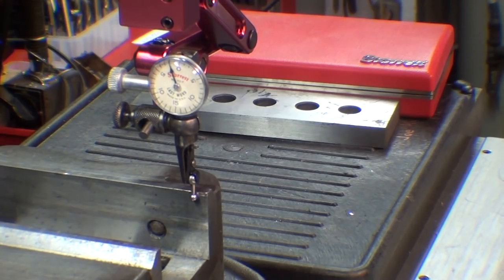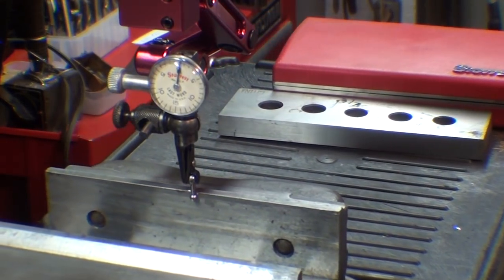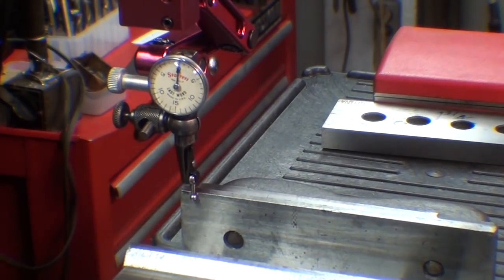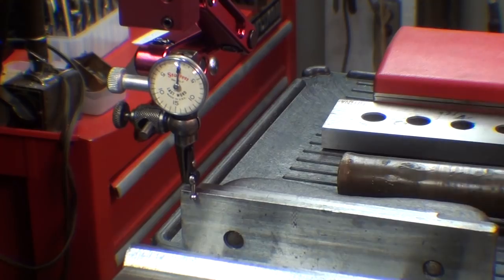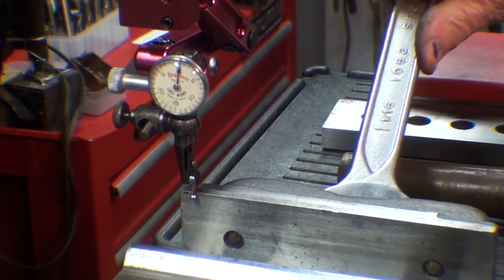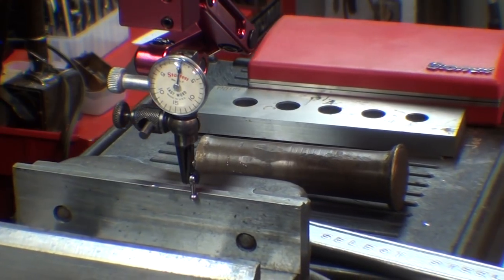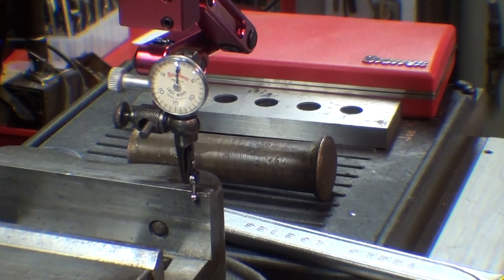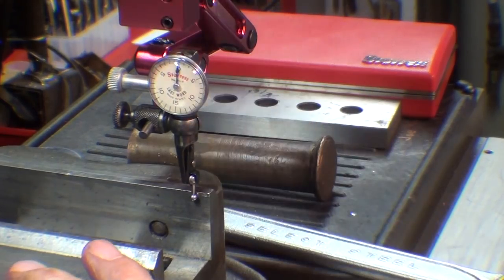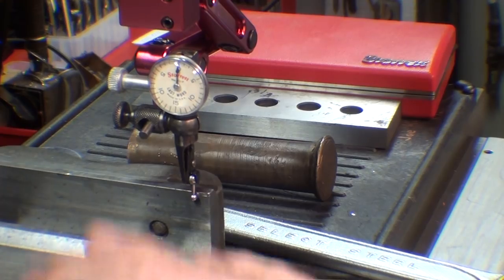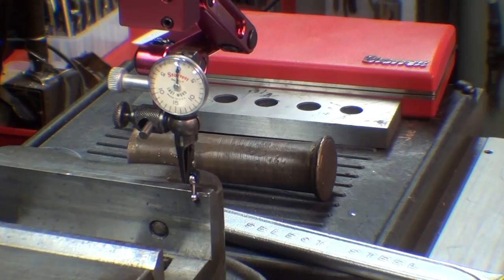I'll adjust the zero and run it back across. And I am within a half a thousandth. I will tighten both bolts and always check it again after you tighten the T-slot bolts just in case it has moved a little bit. There's a little deflection here in the middle so that jaw may not be perfectly straight but for all intents and purposes this vise is indicated in to close to perfection and it would be ready to use. So that's how you indicate a vise in on the Bridgeport mill or any other milling machine for that matter.